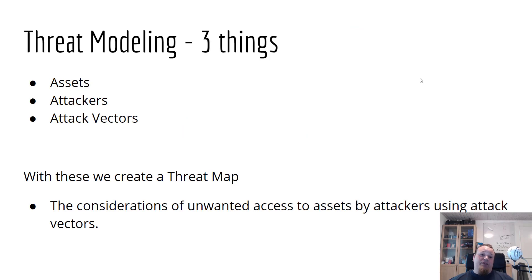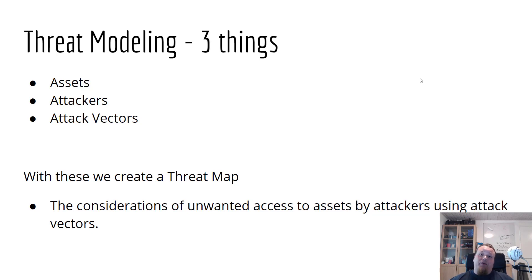There are three things you need to focus on when doing a threat model. Assets — things like computers, cloud data, and so on. Attackers — that could be many different things: insiders, hackers, hired people, or even a hurricane. And attack vectors — that is the way you're going to get into the system. For example, if you go through cameras and find a network connection you can use as a jump-off point, that is your vector. With these three, you can create a threat map and get an overview of which threats you have.